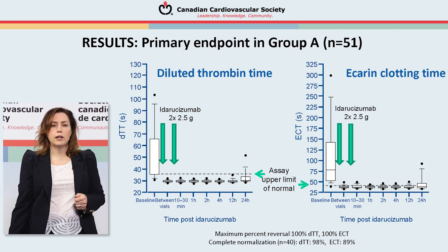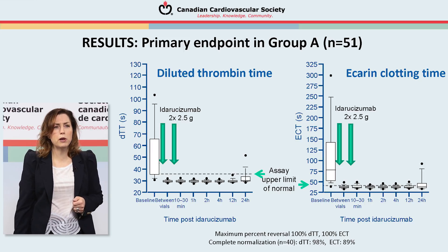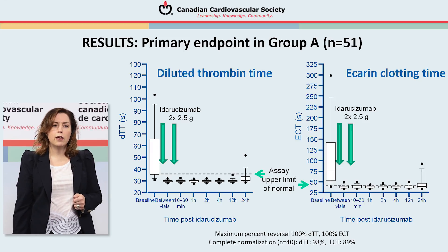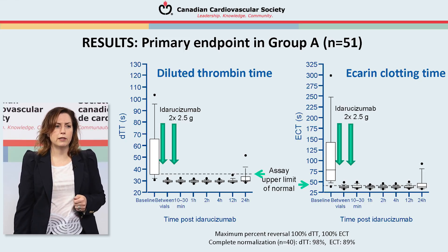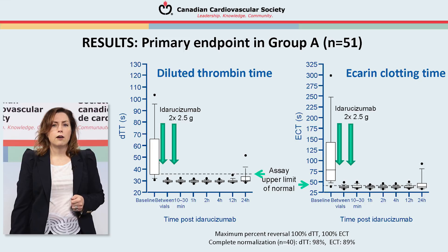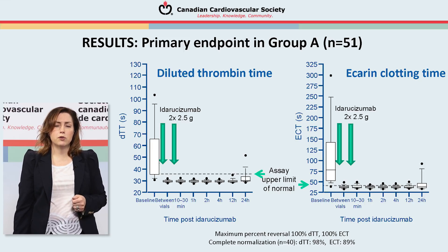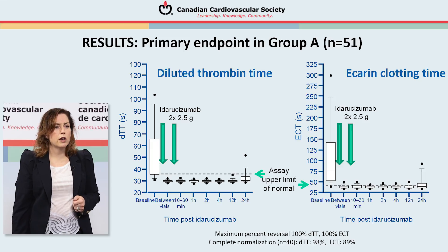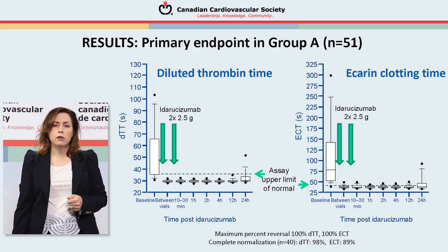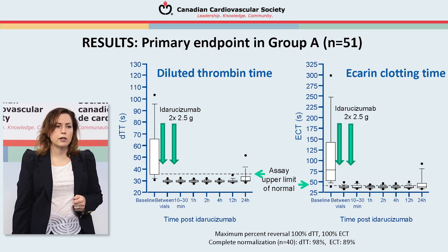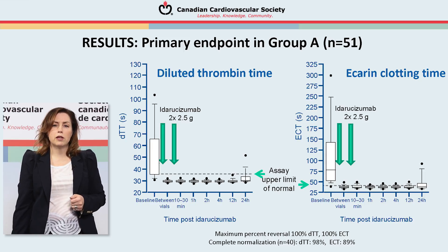Not all patients actually had elevated coagulation parameters in the trial. Of the 51 patients enrolled in Group A, 40 had elevated dilute thrombin time and 47 had an elevated ecarin clotting time at enrollment. After administration of idarucizumab — two by 2.5 gram doses, 15 minutes apart — there was 100 percent maximum reversal and complete normalization in 98 percent of patients when looking at dilute thrombin time, and 89 percent of patients when looking at ecarin clotting time.